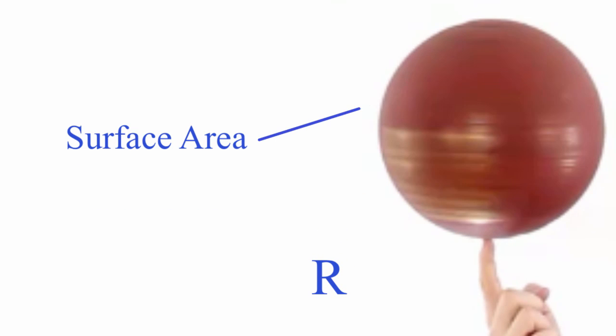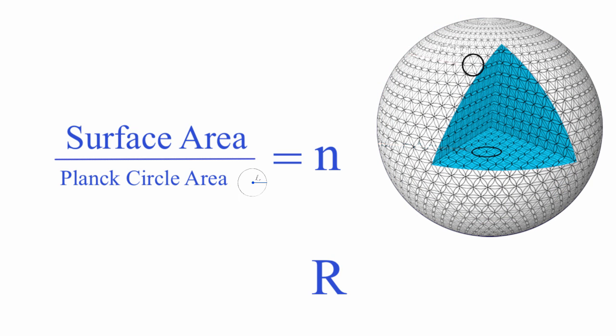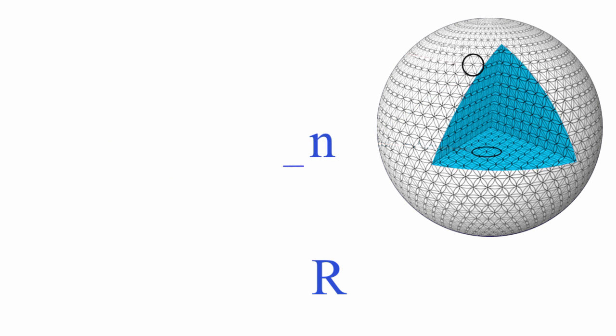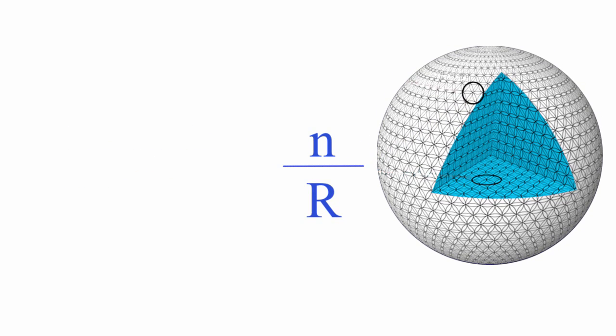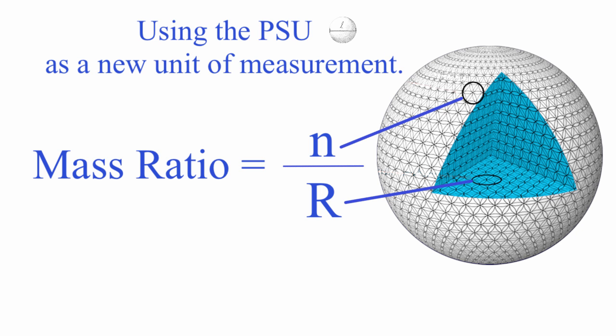Then, if we take the surface area of the proton and we divide it by the Planck circle area, we get N, the number of areas that we can tile on the surface of the proton. Then, we divide the number on the outside by the number on the inside and we get the mass ratio. Surface area divided by volume using the PSU as a new unit of measurement.